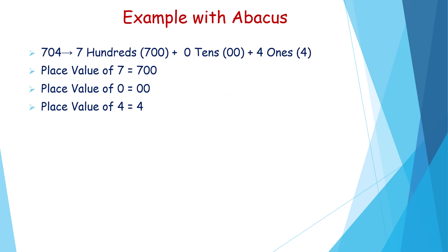Here we are taking 704. How to write in the expanded form? 7 hundreds plus 0 tens plus 4 ones. What is the place value of 7? 700. What is the place value of 0? 0 tens. What is the place value of 4? 4 ones.